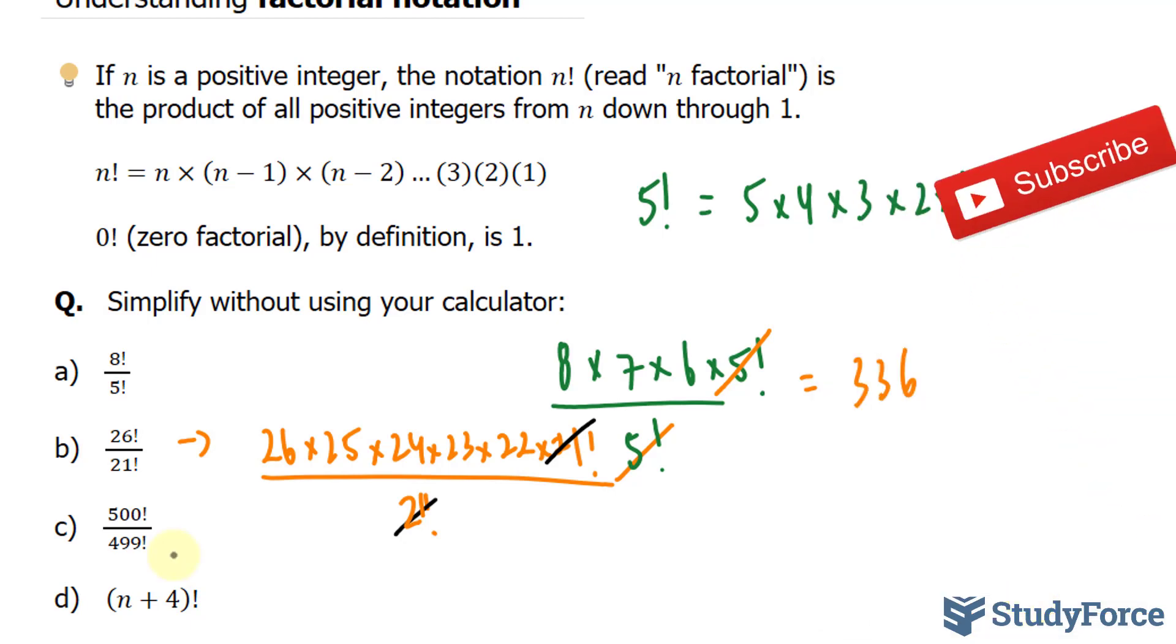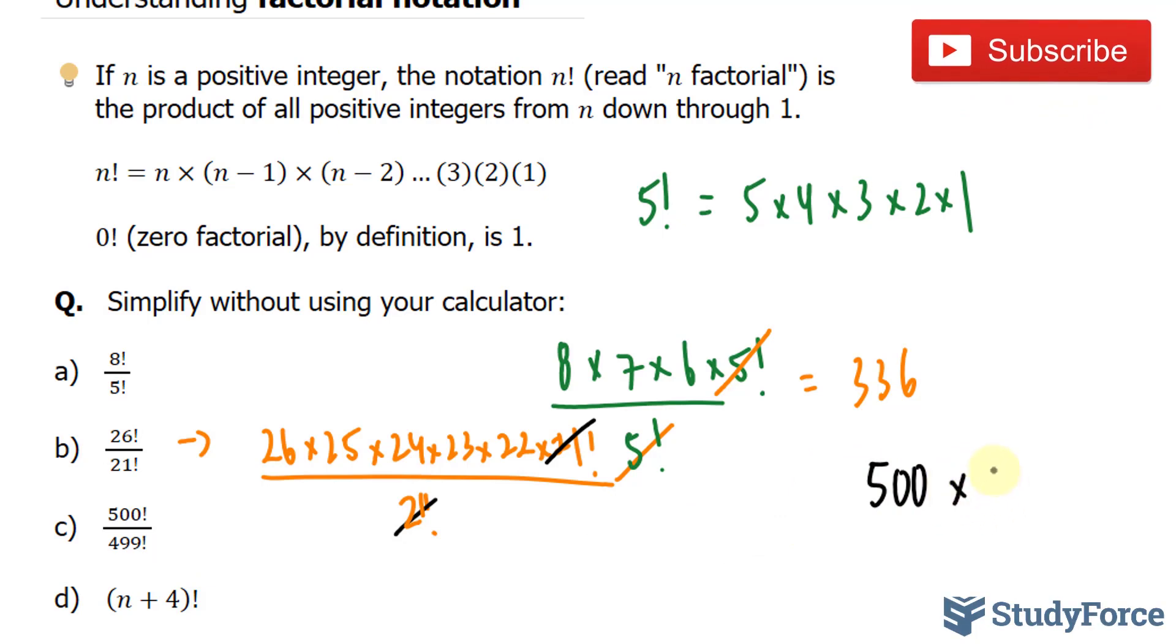In question C we have 500 factorial over 499. So I'll do my work here. 500 times 499. I'll stop right there. The 499 at the bottom and the top cancel out, leaving us with only 500 and that's our answer.